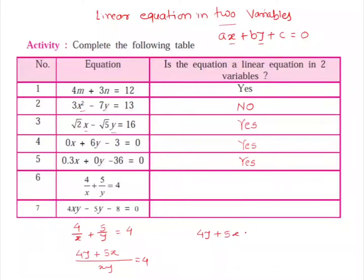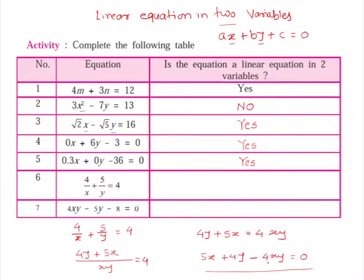After simplification we get 5x plus 4y minus 4xy equals 0. This equation has three terms: 5x, 4y, and minus 4xy. The last term has two variables x and y, both with power 1, so adding them gives power 1 plus 1 equals 2. The highest power in this polynomial is 2, so the degree is 2. Since the degree of a linear equation cannot be 2, this is not a linear equation.